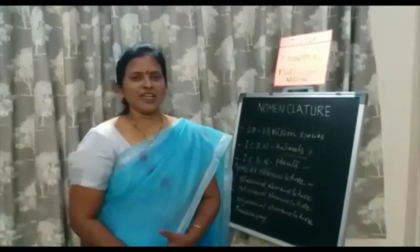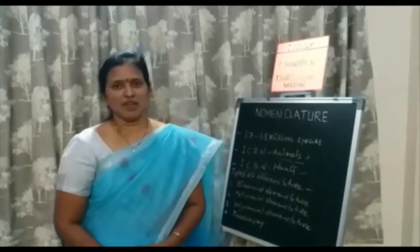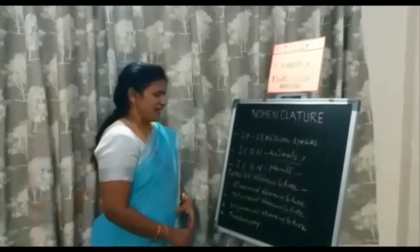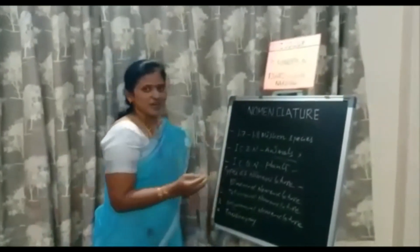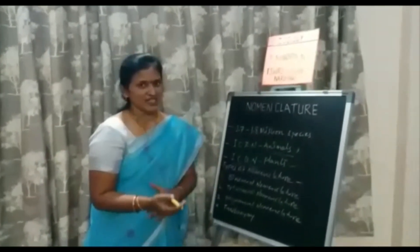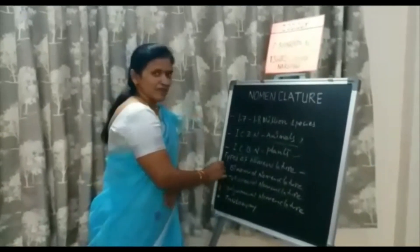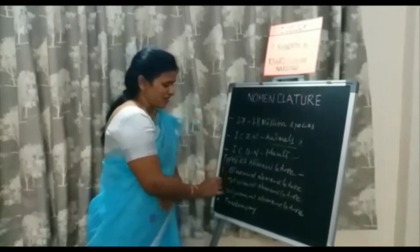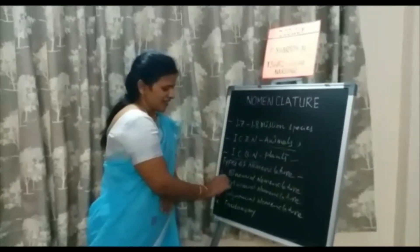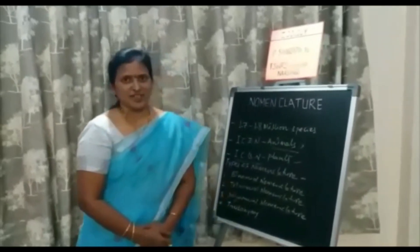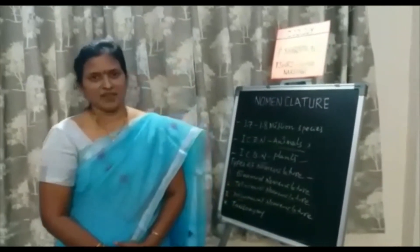Today, in our topic, we learnt about the naming of organisms, that is, nomenclature. Nomenclature is of three types, which we are going to learn in our next session. Before that, you just prepare with binomial nomenclature, trinomial nomenclature, and polynomial nomenclature. Come prepared with those topics. Thank you.